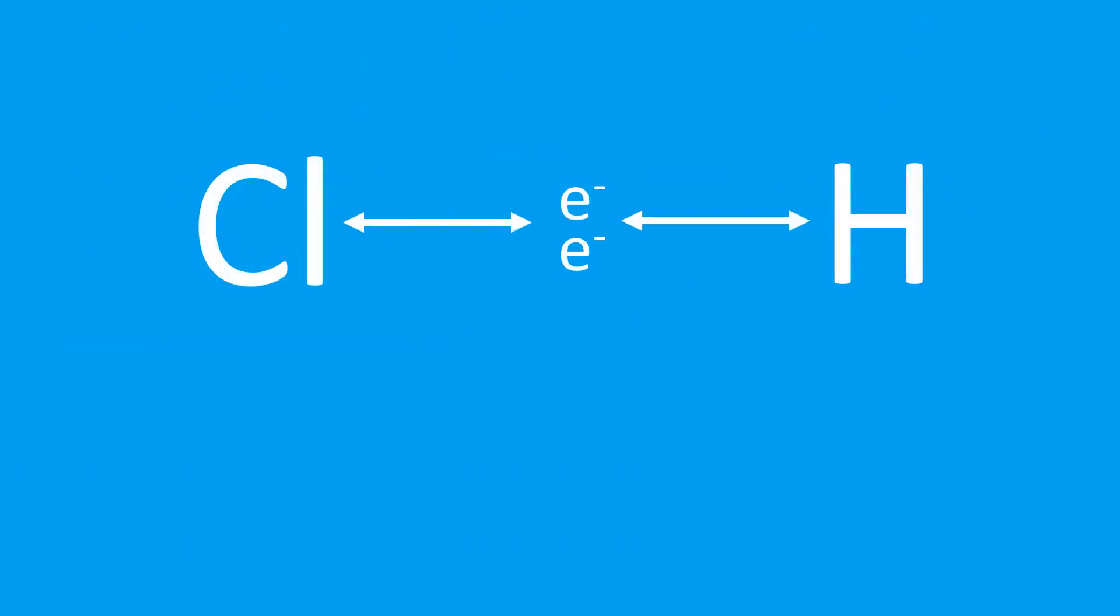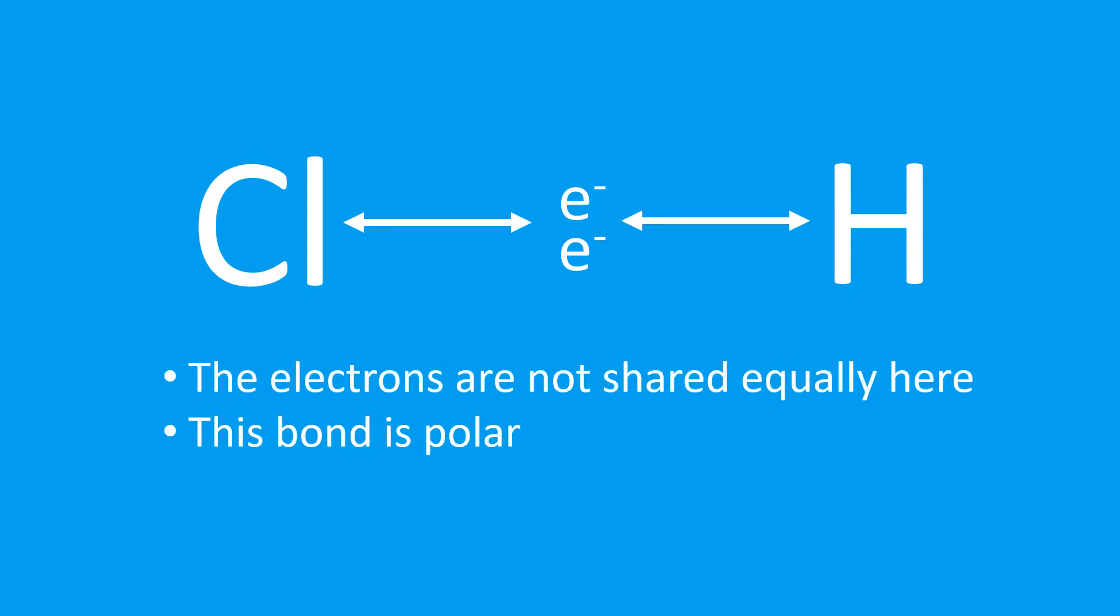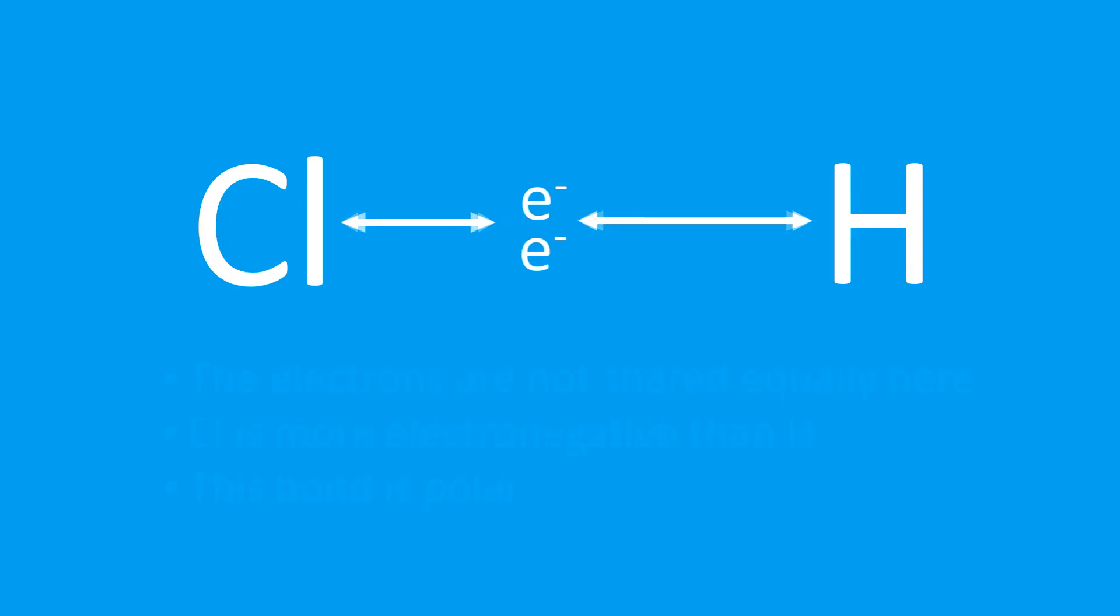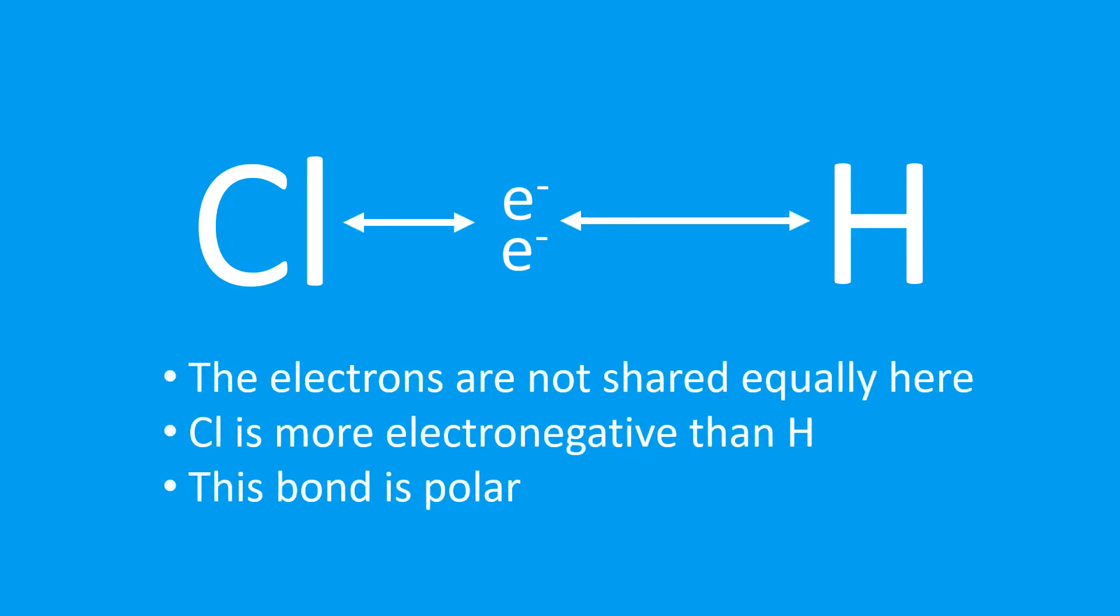So here we have HCl. Those electrons are not shared equally. This bond is said to be polar, and this is because the chlorine is in fact more electronegative.